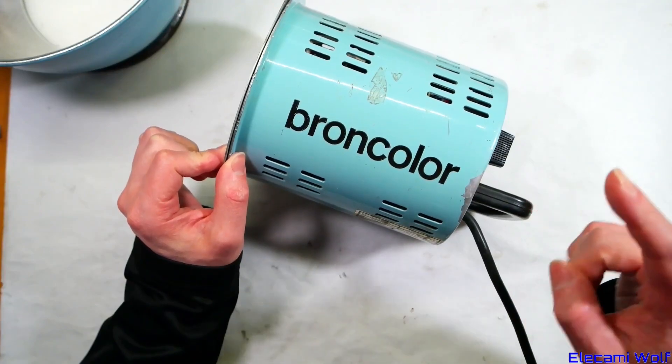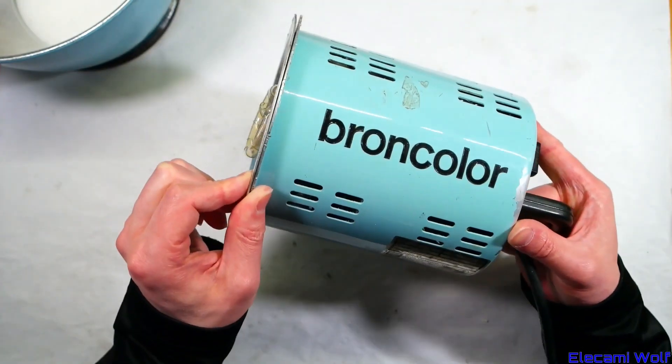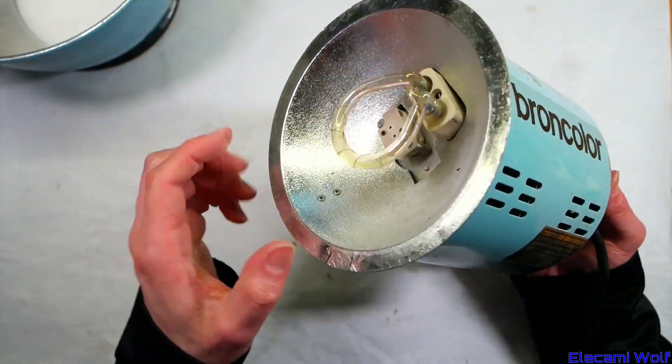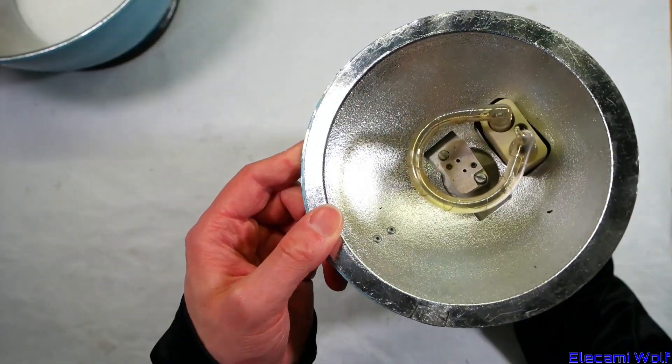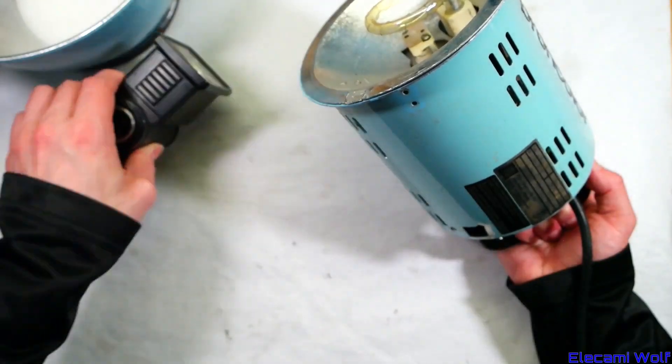140th video in this series, and instead of taking a look at a VCR, we'll have a look at this thing, Bron Color. It's a photo flash, fairly hard out type, a bit more substantial than the kind of thing you typically see.